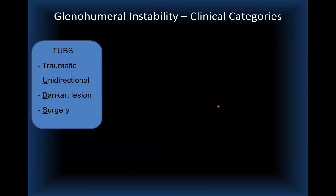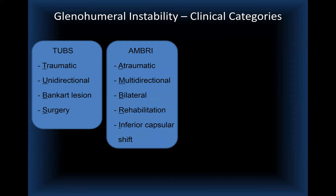The two main clinical categories of major instability are TUBS and AMBRI. TUBS stands for Traumatic, Unidirectional, Bankart, usually requiring Surgery. AMBRI stands for Atraumatic, Multidirectional, Bilateral, Rehabilitation, and Inferior capsular shift procedure. You can think of TUBS as 'torn loose' while AMBRI is 'born loose.'